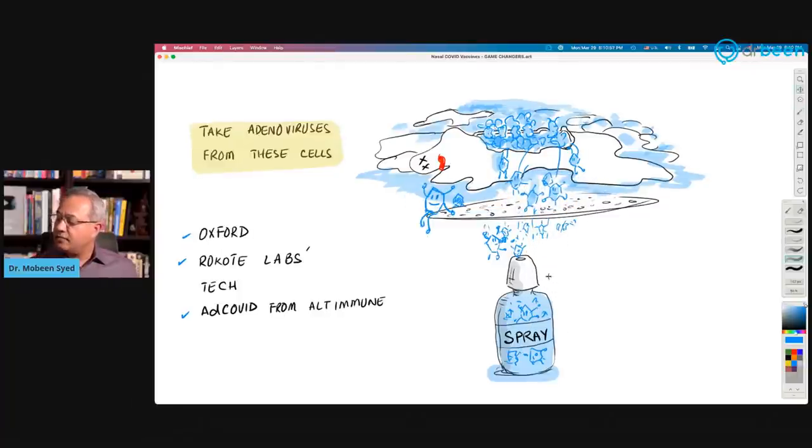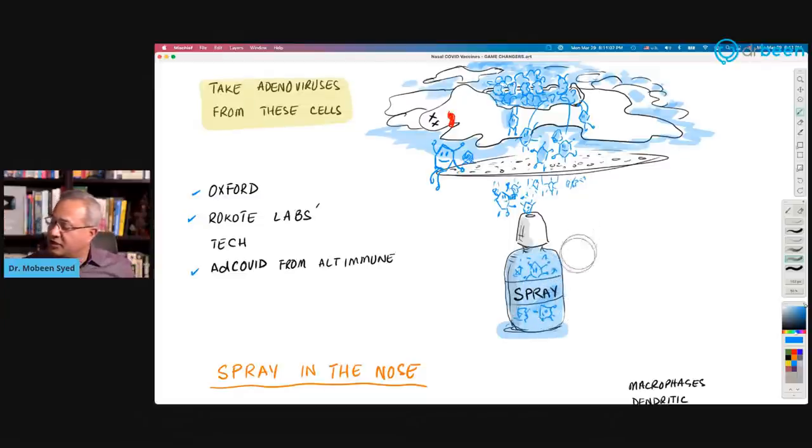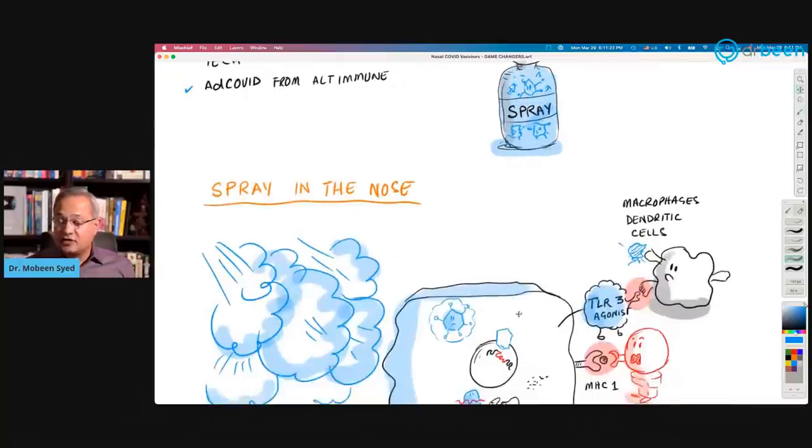Then we filter them, we purify them, and we make sure that the cell debris, cell broken pieces are not in the vaccine, just the adenoviruses are in the vaccine. So we collect them in this spray bottle, we make spray bottles from them. If you can see, these are kind of hiding in there. These are the adenoviruses. This technology is for Oxford, for Rokote Labs from Finland, and for AdCOVID from AltImmune, US-based company.